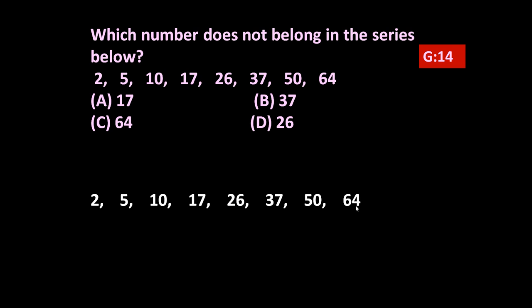26, 37, 50, and 64. Now let us find out their difference. Difference of 5 and 2 is 3, 10 and 5 is 5, 17 and 10 is 7. You can see a proper order, this difference